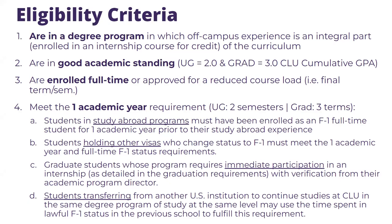You must be in good academic standing. Undergrad students must maintain at least a 2.0 cumulative GPA, and 3.0 for grad students. You must be enrolled full-time or have been approved for reduced course load or RCL. You must have met the one academic year requirement, which means undergrad students must have completed two semesters prior to being eligible for CPT, or three terms for grad students.